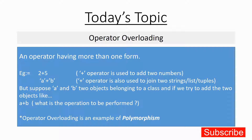We have operators like arithmetic operators and relational operators. For example, the plus operator is used for adding two numbers. When we try to add two numbers like 2 plus 5, it gives the answer 7 because it does the addition of two integer numbers. But the same operator, if we try to add two strings like a plus b, it gives the answer 'ab' — it joins the two strings.